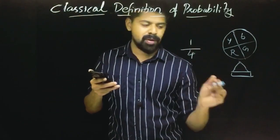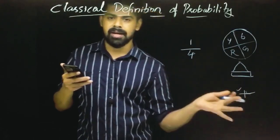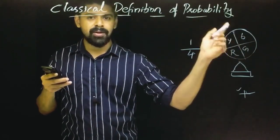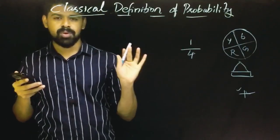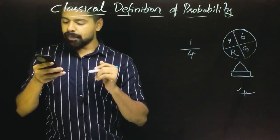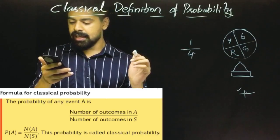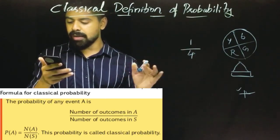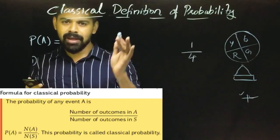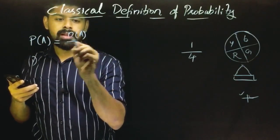If we are talking about a coin tossing experiment, we are talking about coin tossing. The probability of any event A is equal to the number of outcomes in A divided by the number of outcomes in S. This is the probability of landing on blue.